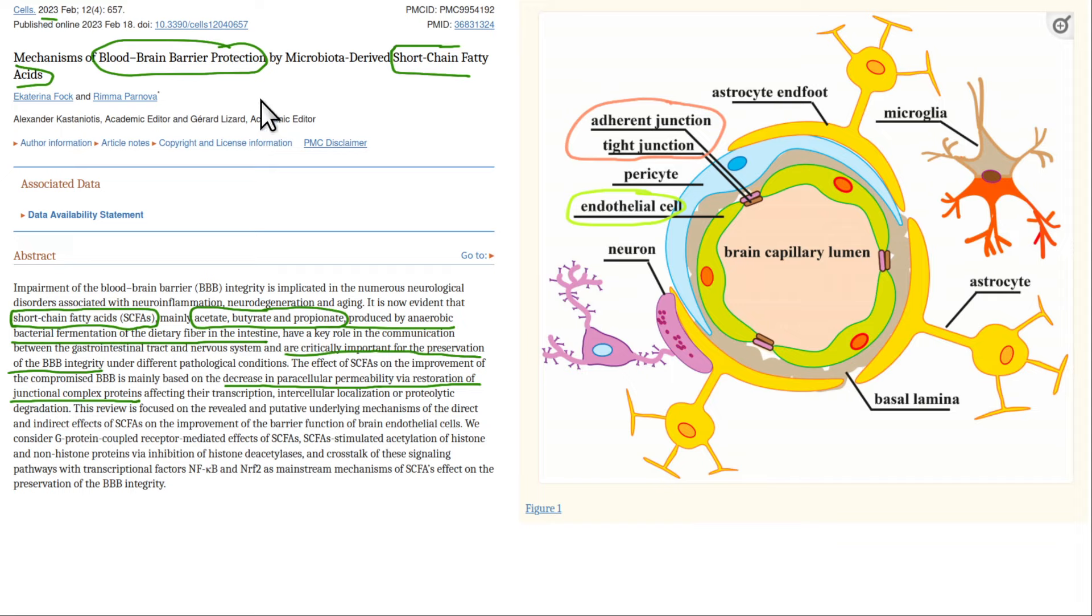And so here, for example, is a paper showing mechanisms of blood-brain barrier protection by microbiota-derived short-chain fatty acids. What that means is you eat the dietary fiber, and microbiota just means the bacteria in your gut, they convert your dietary fiber into short-chain fatty acids.